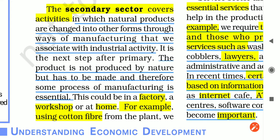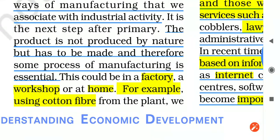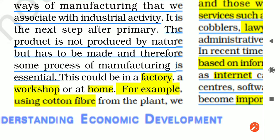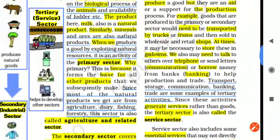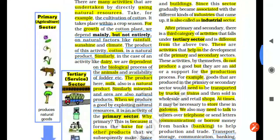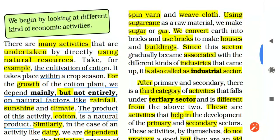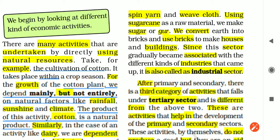The secondary sector is the next step after the primary sector. We take a primary product — a raw material — and change it into a new product, and the process is called manufacturing. This manufacturing can take place in a factory, a workshop, or at home. For example, using cotton fiber from the plant, we can spin a yarn and then weave cloth. Using sugar cane as raw material, we can make sugar.